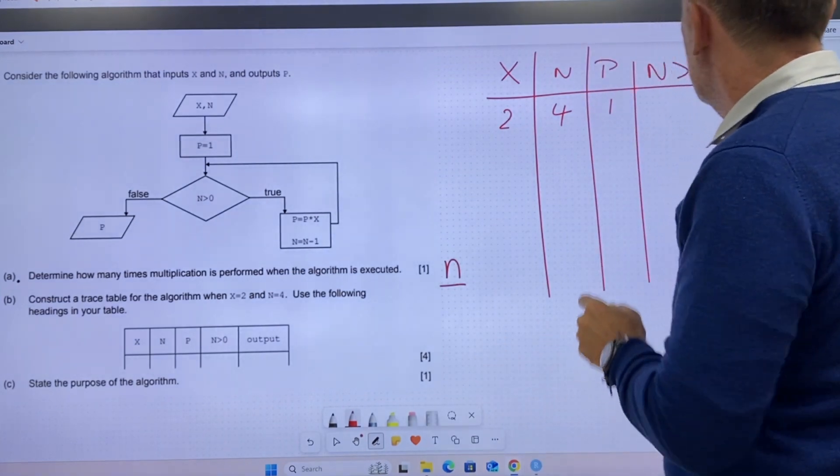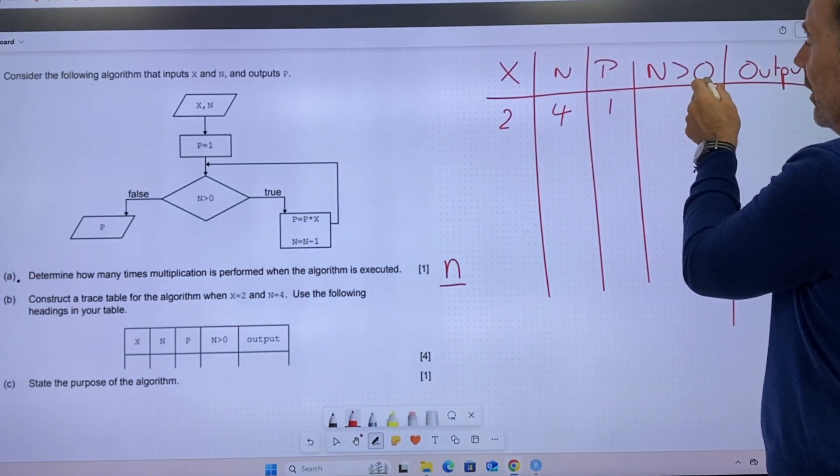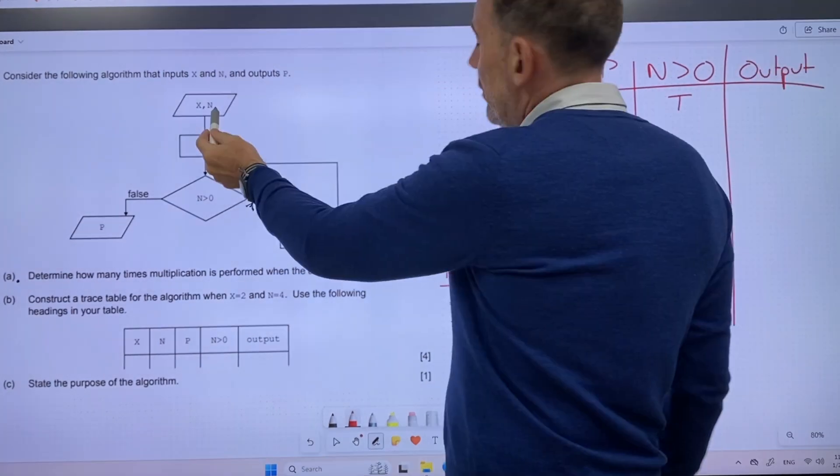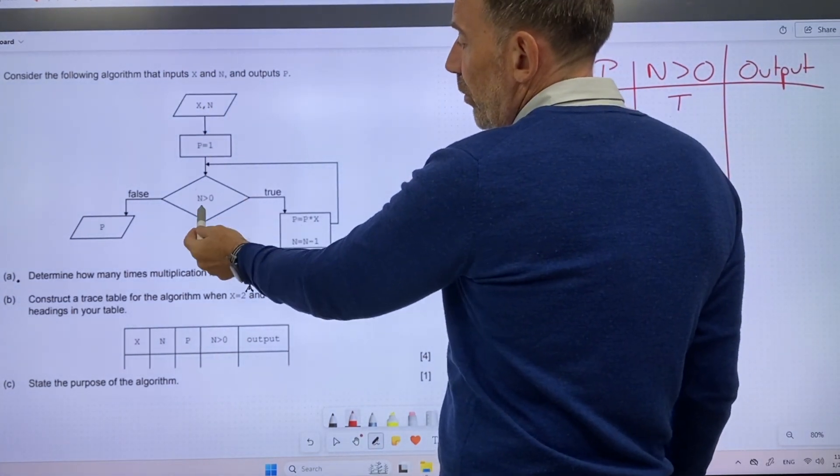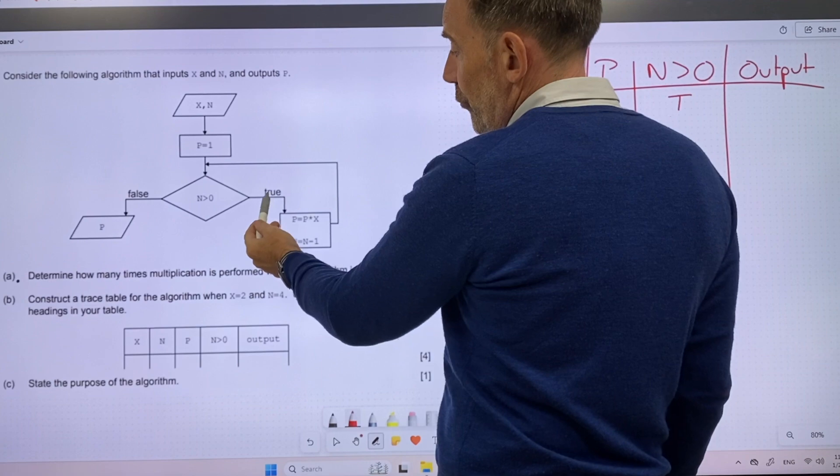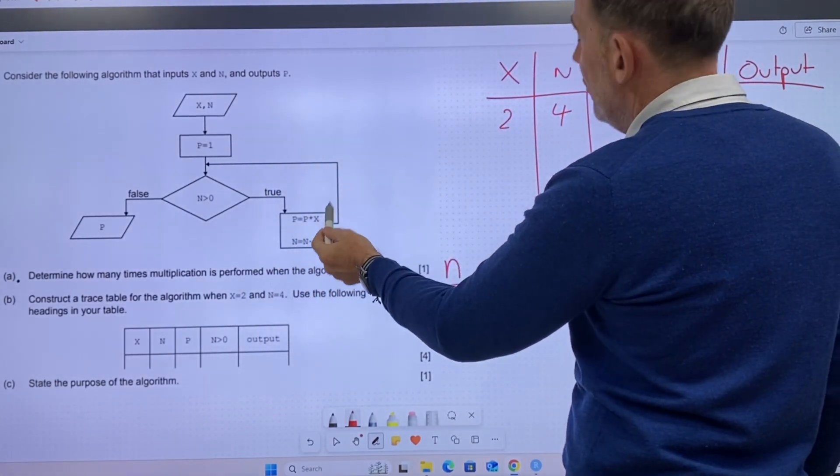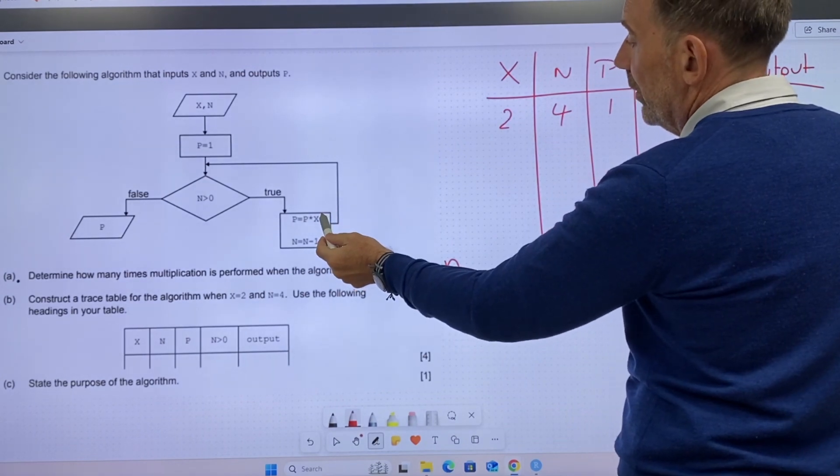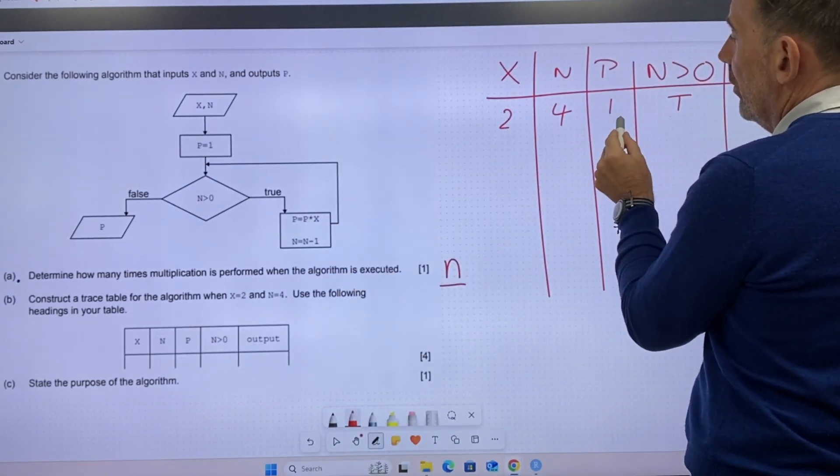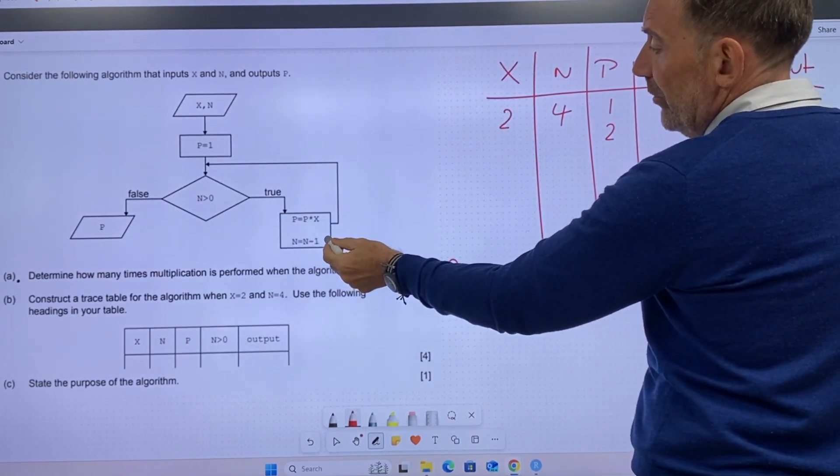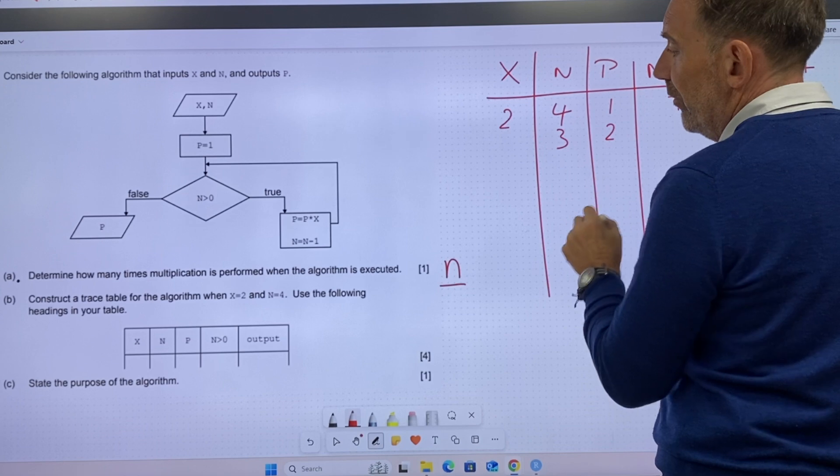So looking at this, is n greater than zero? Well, that's true. Of course it is. We've put the values in. P equals one. N is greater than zero. That's true. P equals p times x. Two times one. P equals p, so that must be two. N equals n minus one, which is three.